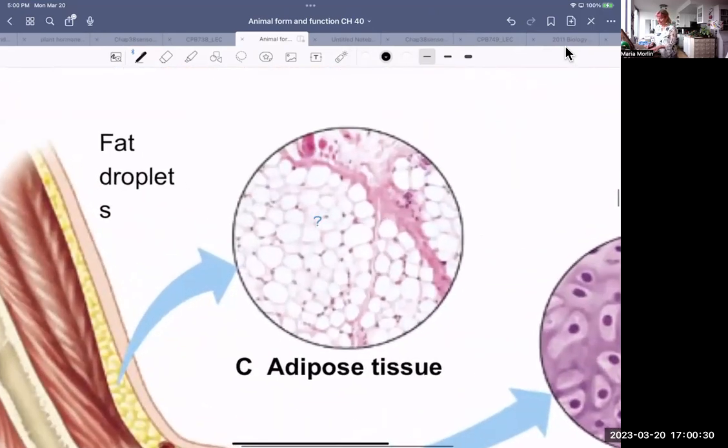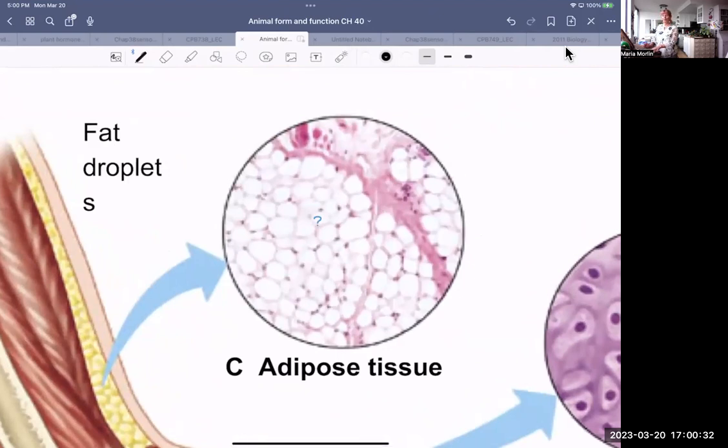Adipose tissue is included in connective tissue. I think because it stores fat. So here's one adipose cell. And inside will be one fat droplet.